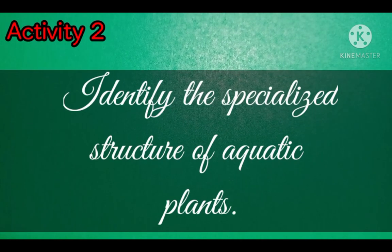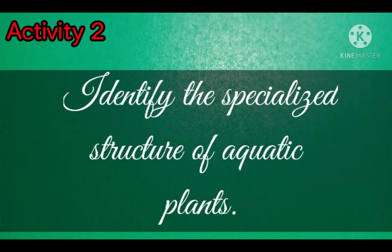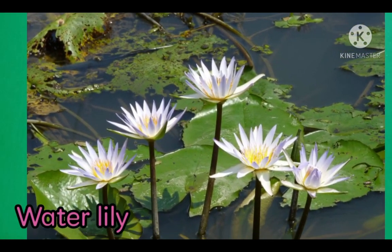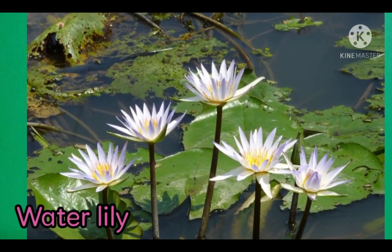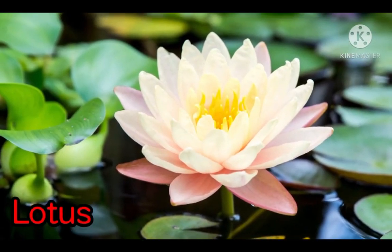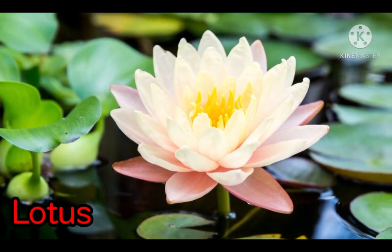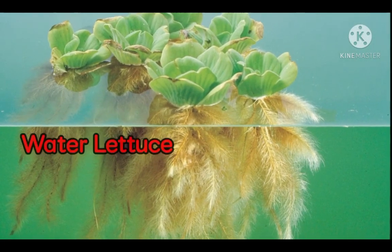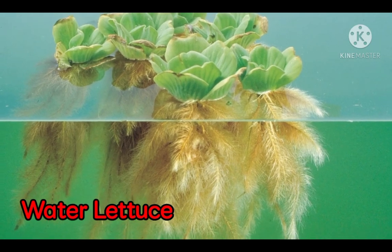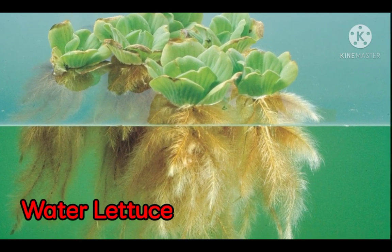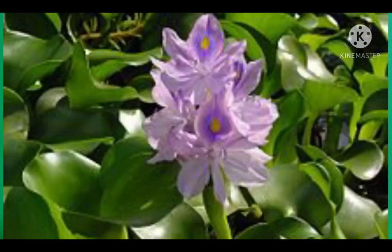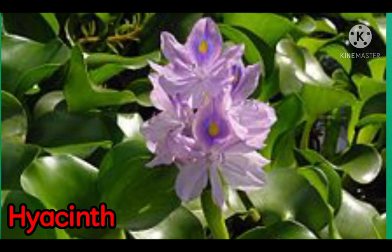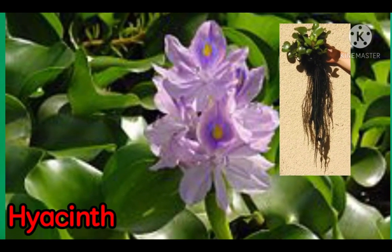Activity 2: Identify the specialized structures of aquatic plants. The leaves of water lily are wide, thick, and buoyant — these structures help them float in water. Lotus plants float because of their flat and broad leaves. Tiny hairs on the roots and leaves enable the water lettuce to float, making sure that it does not sink in its watery environment. Leaf stalks of water hyacinth have air-filled tissues to make it float, and they have long roots which enable them to reach the soil underwater.